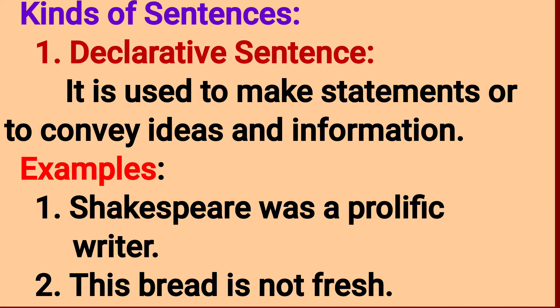Declarative sentences are used to make statements or to convey ideas and information. Examples: 'Shakespeare was a prolific writer' — prolific means creativity. That is a normal positive statement ending with a full stop. 'This bread is not fresh' — that is a negative statement. So both positive and negative sentences here are declarative, or assertive, statements.